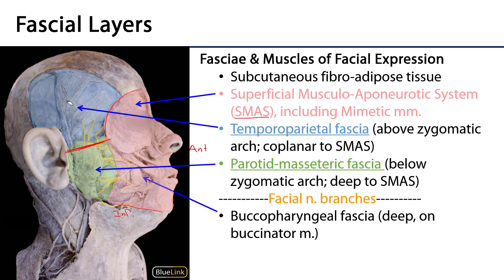Let's start superiorly and work our way down. The temporal parietal fascia gets its name because it invests the temporalis and is in the region of the temporal bone, overlapping with the parietal bone. In some cases it can be quite dense, as you may experience in dissection. This temporal parietal fascia is co-planar to the SMAS — they share a boundary and have very little if any overlap between them. We may see some overlap at the lateral edge of orbicularis oculi, but for the most part SMAS and temporal parietal fascia are co-planar.